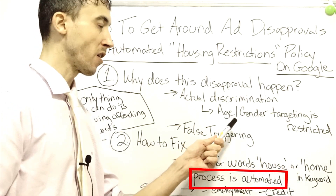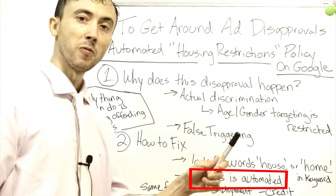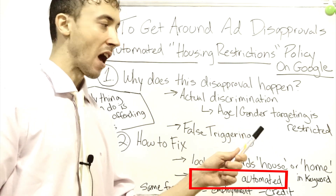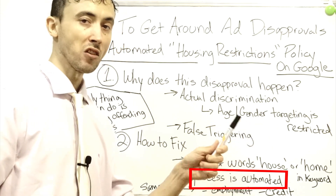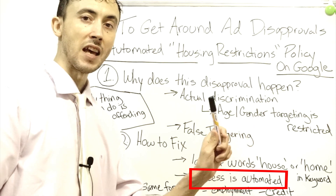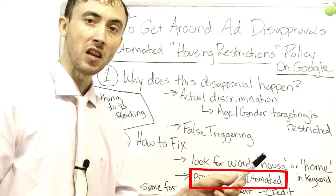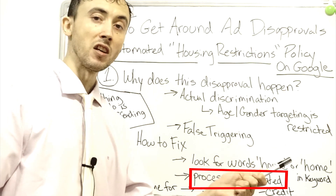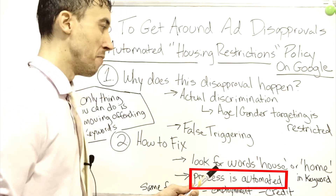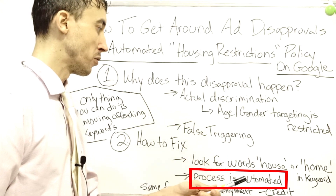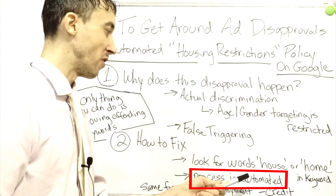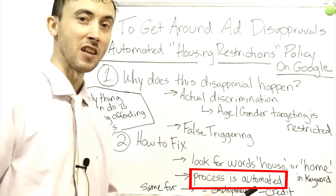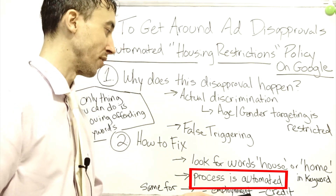They're also going to scan your landing page and your ad for certain things. As far as them shutting down your ads completely, they'll flag an account if you have certain language having to do with these three niches in your ads or landing page so that somebody can actually check to see if you're discriminating. You're not going to get around it through images or anything like that — you're going to get caught.